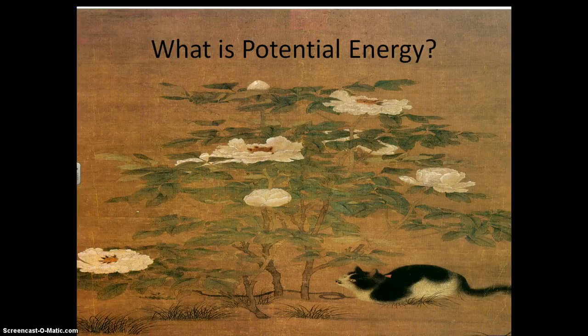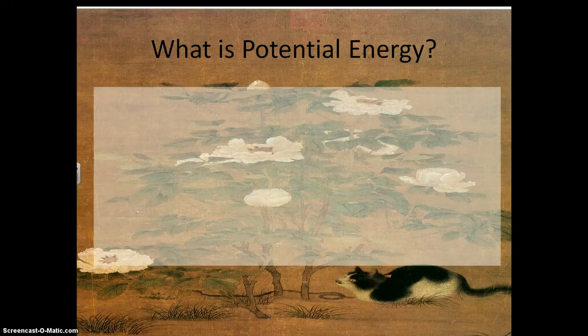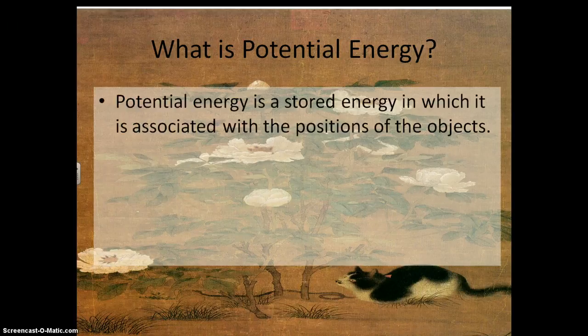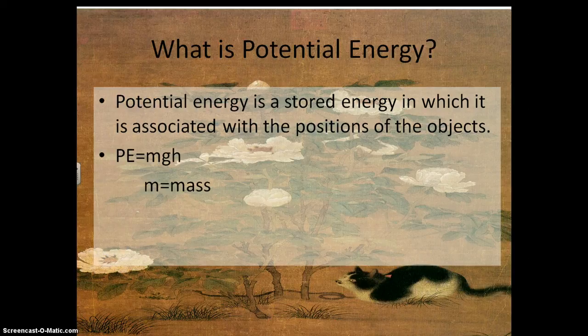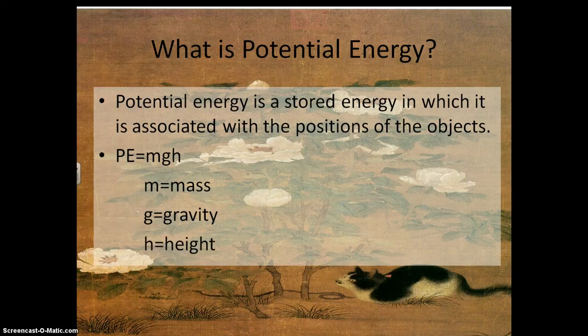Our first type of mechanical energy is potential energy. Potential energy is an energy that you have based off of some kind of position or stored energy. It says that potential energy is a stored energy which is associated with the positions of the objects. When we are talking about gravity, that position is based off of how high off of the ground you are, and it is arbitrary — you can pick any particular spot you want.